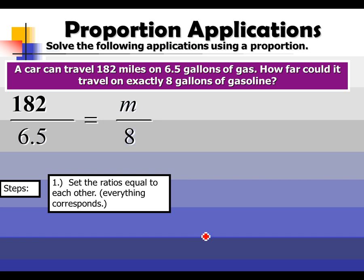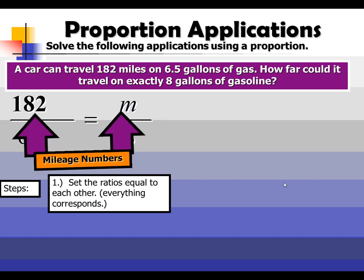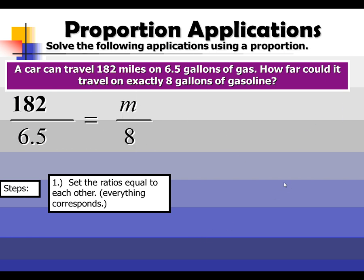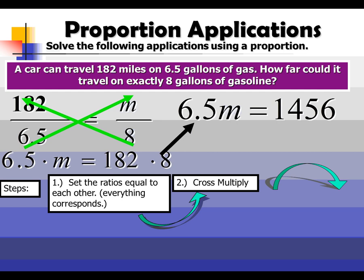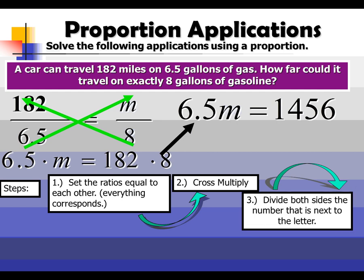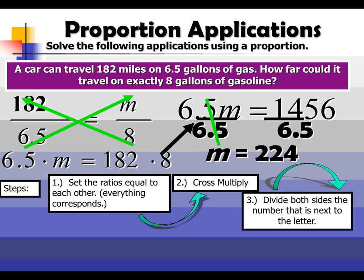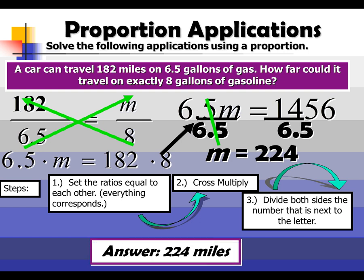Then what you do is solve it. Do the cross multiplication and set up your algebra equation. Solve it with division like we've done with the other examples. When we do 1,456 divided by 6.5, we get 224. So the answer is 224 miles.